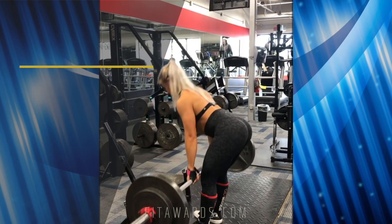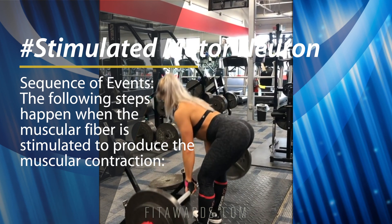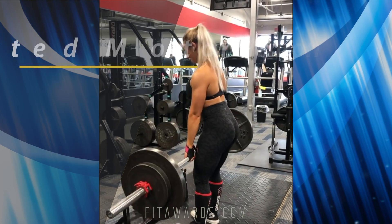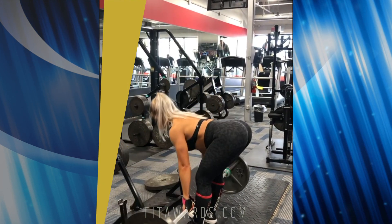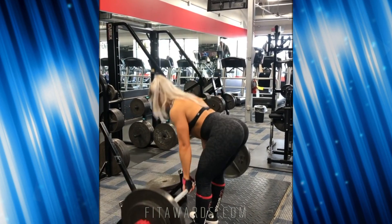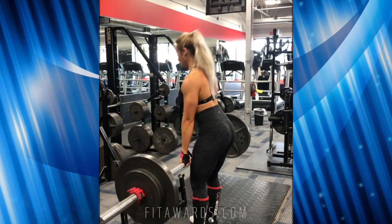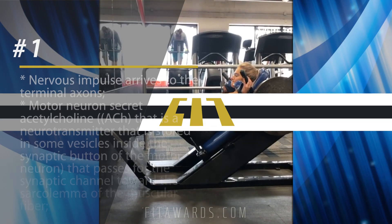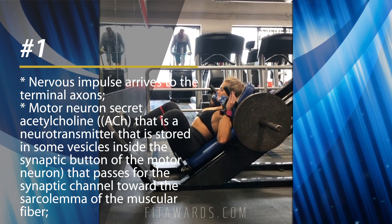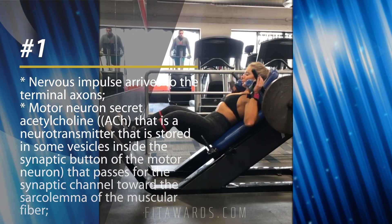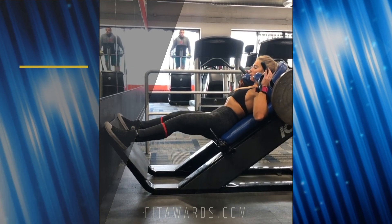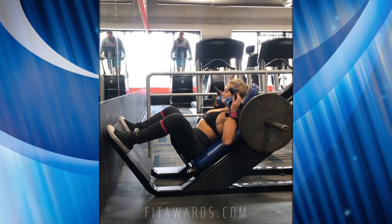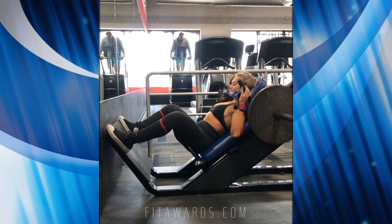The following steps happen when the muscular fiber is stimulated to produce muscular contraction. A nervous impulse arrives to the terminal axons. The motor neuron secretes acetylcholine, a neurotransmitter stored in vesicles inside the synaptic button of the motor neuron, which passes through the synaptic channel toward the sarcolemma of the muscular fiber.